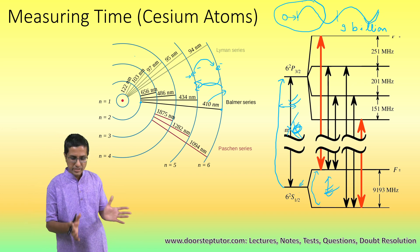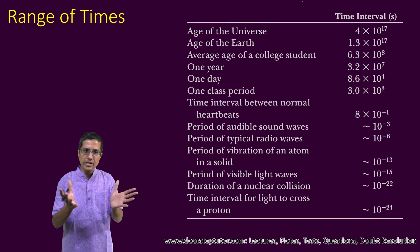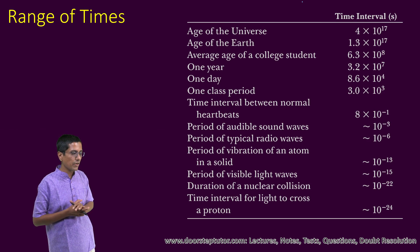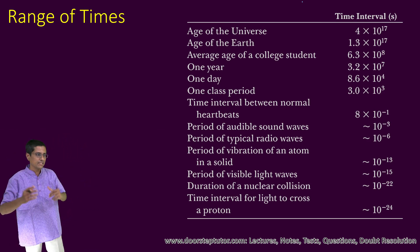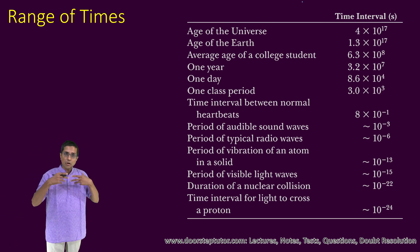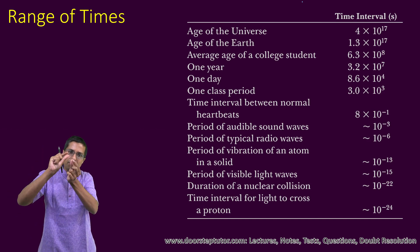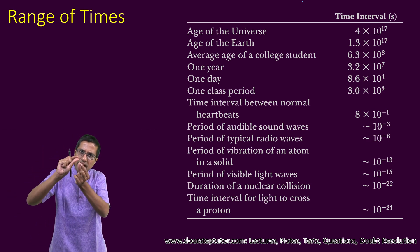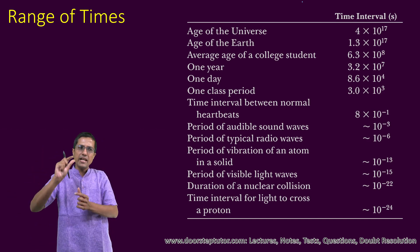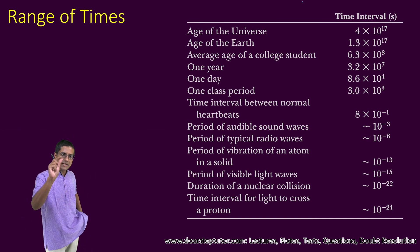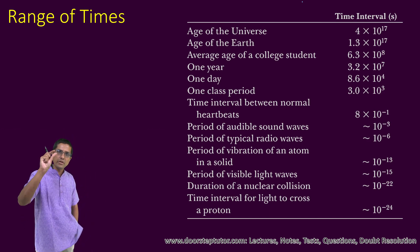This frequency is what we use to measure time. Hyperfine levels are not the normal energy levels — within the same energy level, we have two slightly different energy sub-levels. The energy difference between them produces the electromagnetic radiation we are interested in, in the case of cesium atoms.